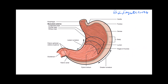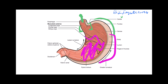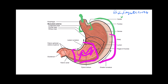Food enters from the esophagus through the gastroesophageal sphincter into the stomach. The very beginning of the stomach is called the cardia, the curving portion is called the fundus, and the rest is called the body. When you taper off from the body you reach the pyloric antrum, then the pyloric canal, which has the pyloric sphincter. The pyloric sphincter leads into the duodenum, which is the beginning of the small intestine.